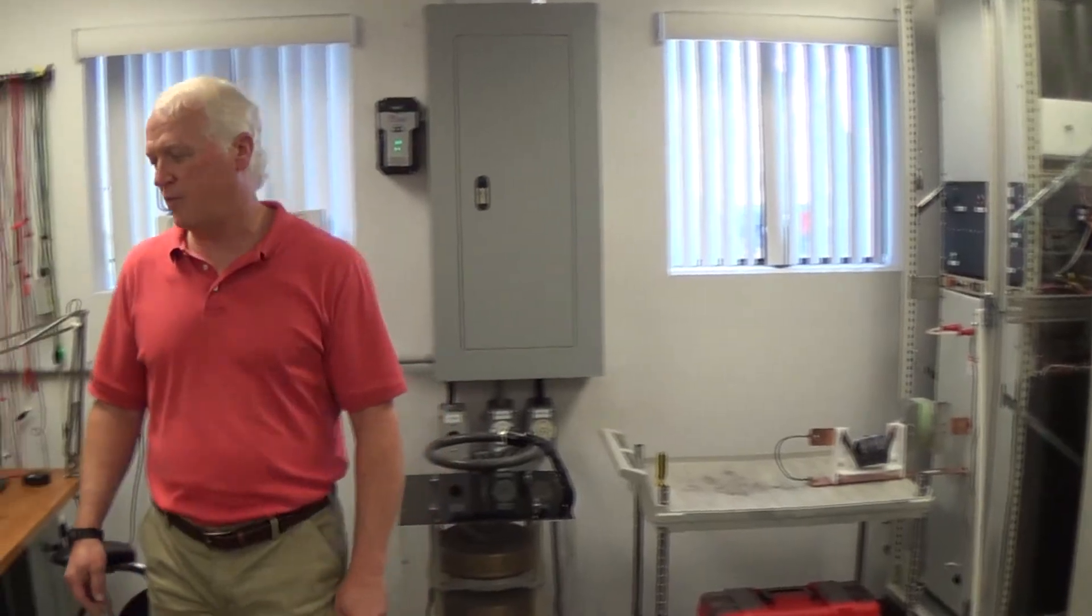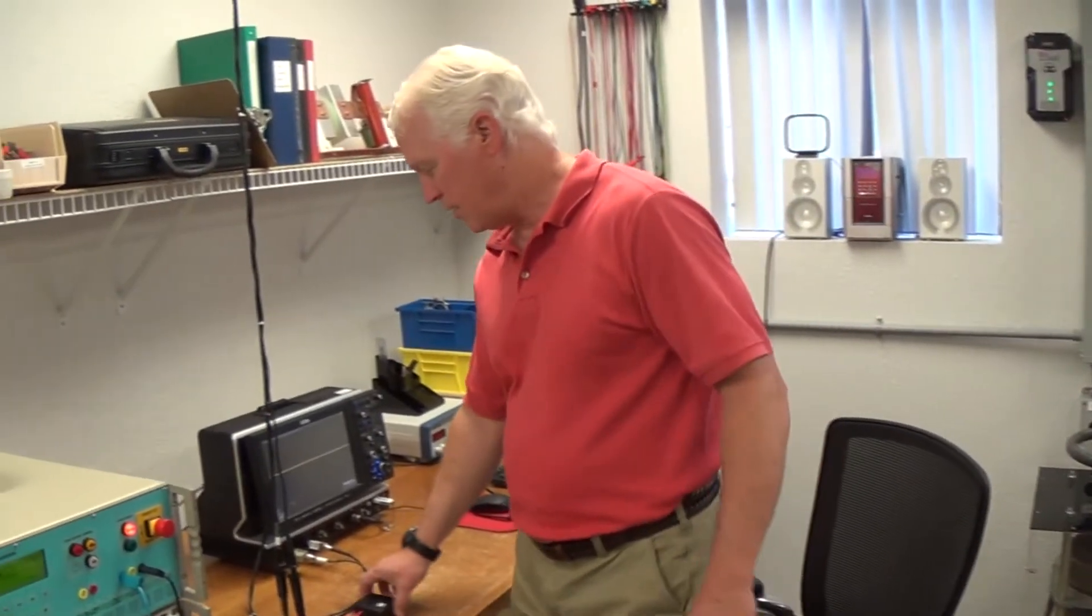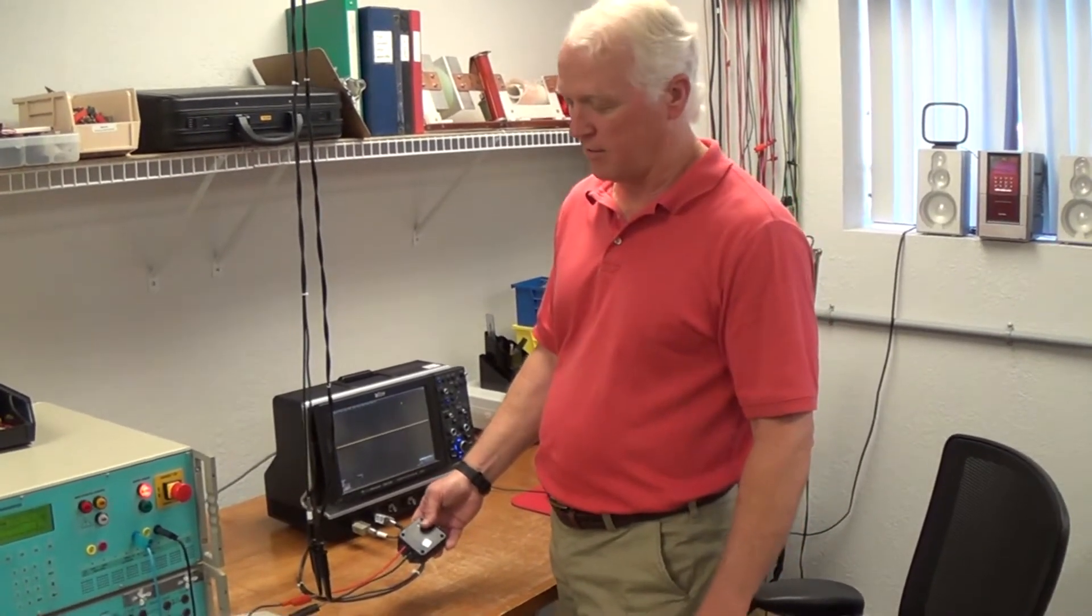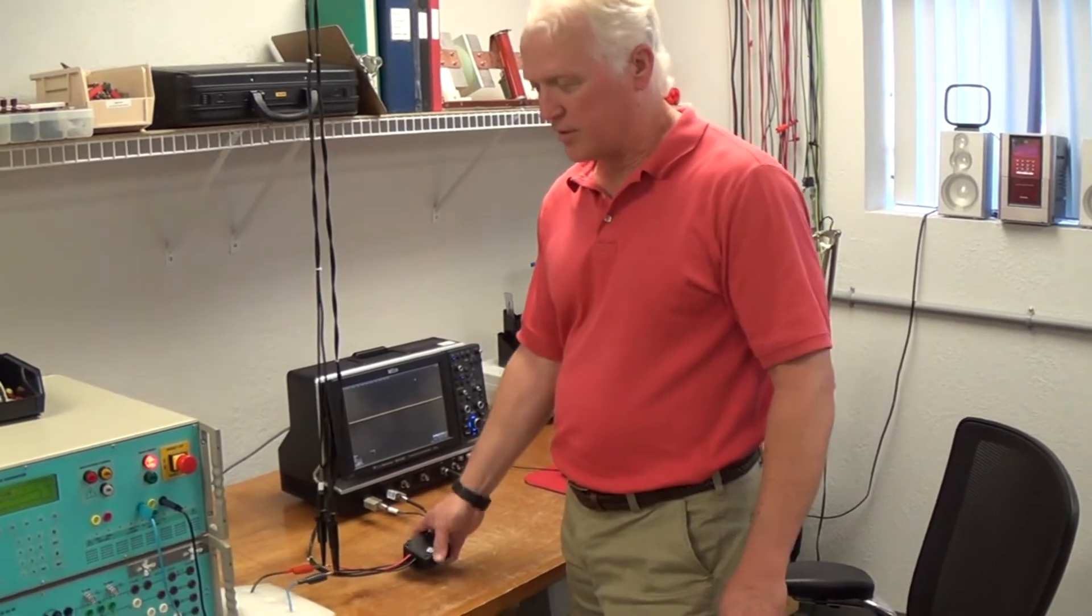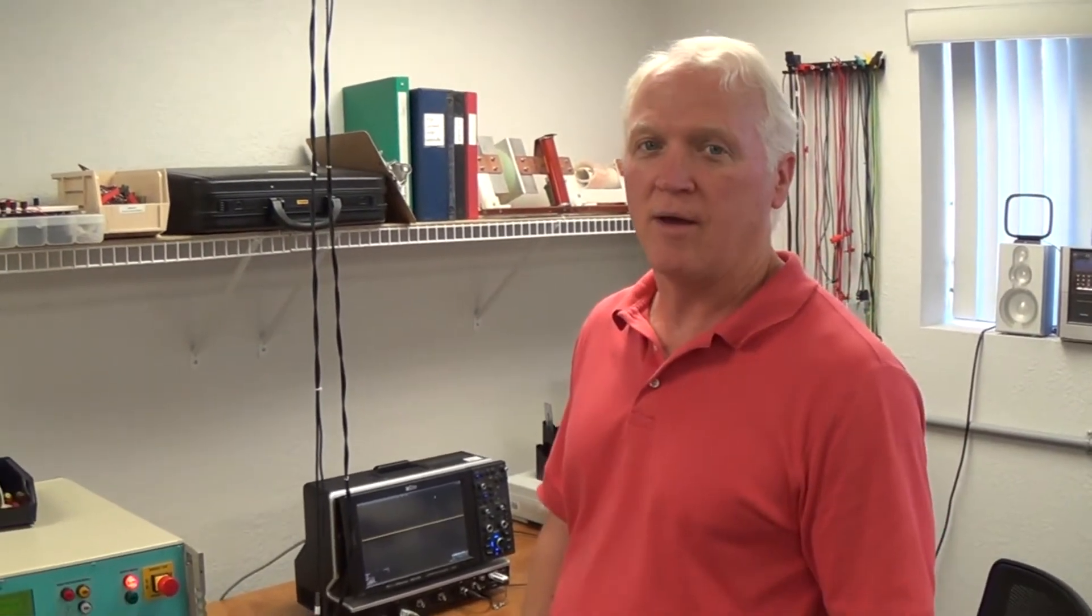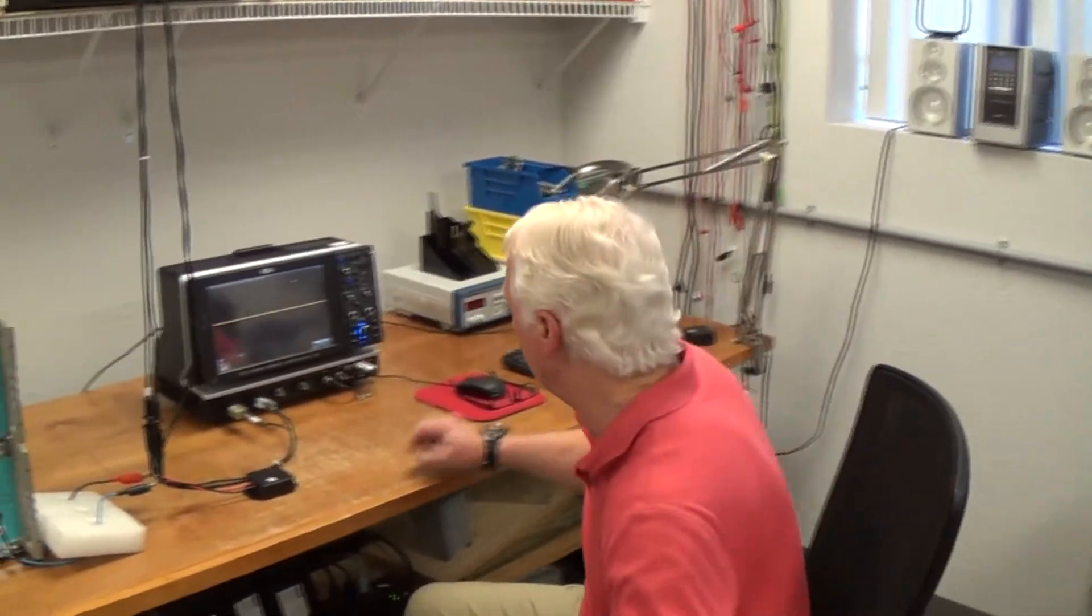To start off with, we're going to surge the unit here. Here's the unit. It's a small unit, easily installed on the boat. We're going to surge it with a simulated lightning strike at 1,000 volts. It'll be 500 amps, and that should simulate a close-by lightning strike coming into the boat.